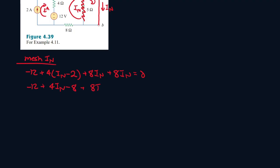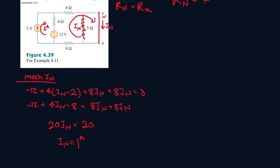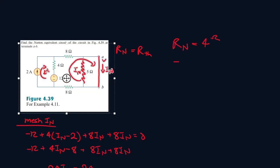8I_N plus 8I_N, so 8 plus 8 plus 4 that's 20I_N. And minus 12 minus 8 that's minus 20. Let's bring that to the other side so it'll be plus 20. 20I_N equals 20, so I_N equals 1 amp. Now let's write the Norton circuit.